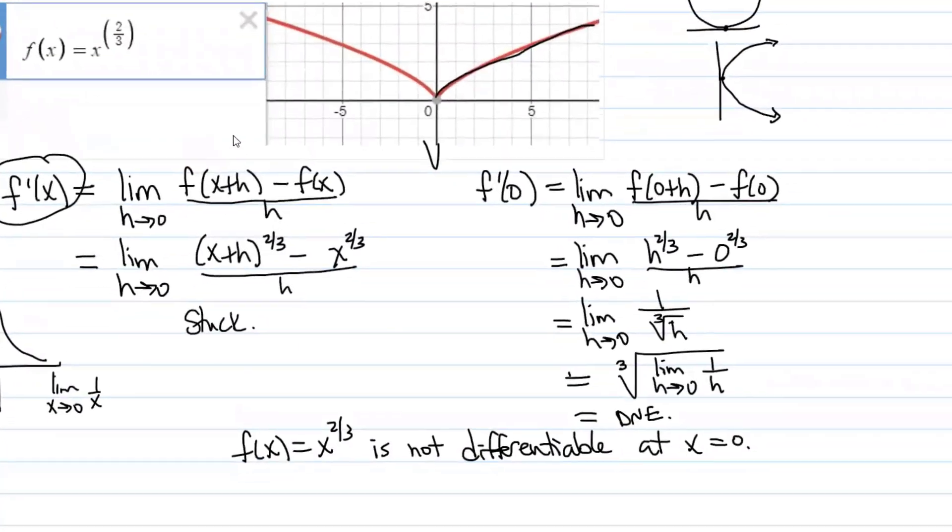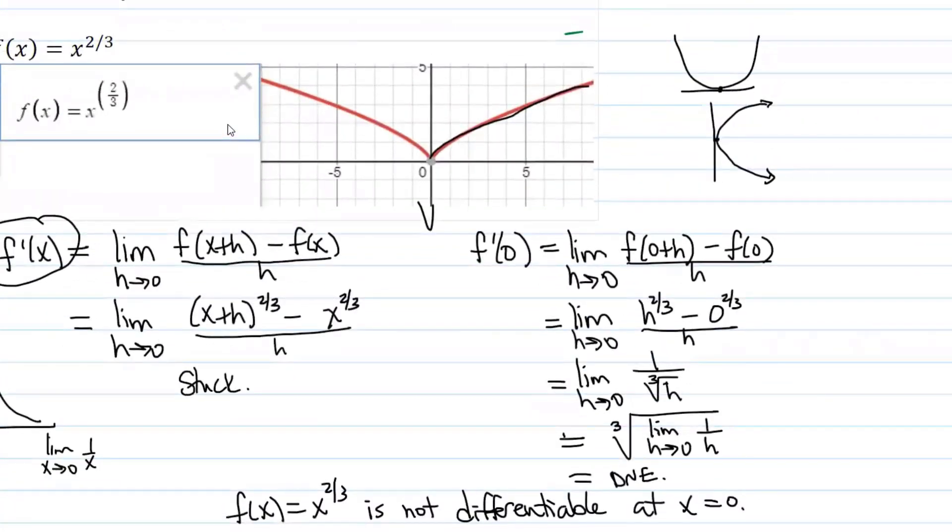So what we would say is that this function f of x is not differentiable at zero. All that means is the derivative does not exist. In general, when there is a sharp point on a graph, either because of a vertical tangent line or another reason that I'm going to explain momentarily, the function will not be differentiable.